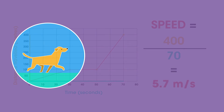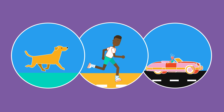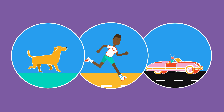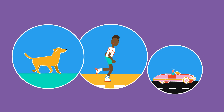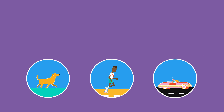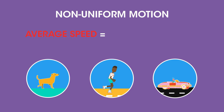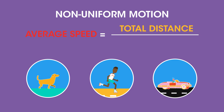So here we have seen a number of different situations where you could be asked to calculate the average speed. No matter what context your question is in, all you need to remember is that for non-uniform motion, the average speed can be found by dividing the total distance by the total time.